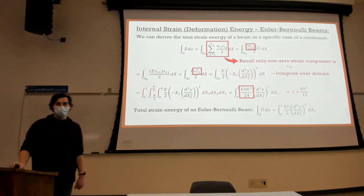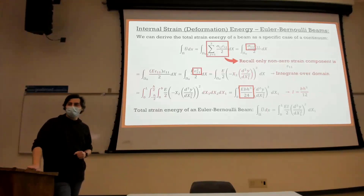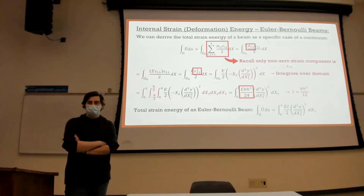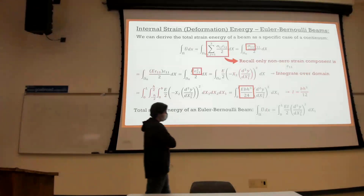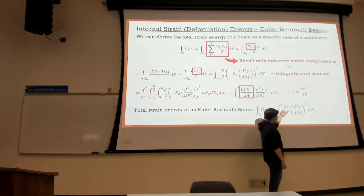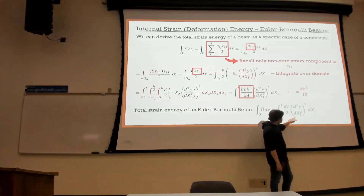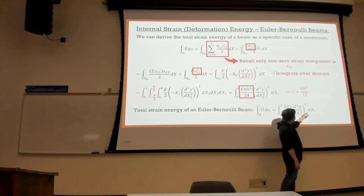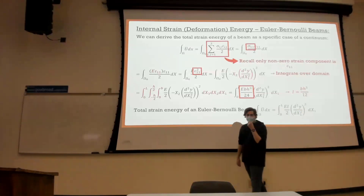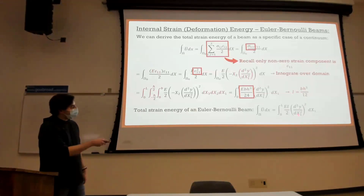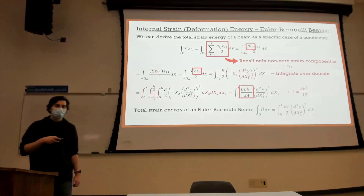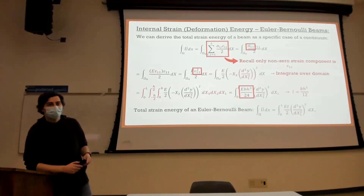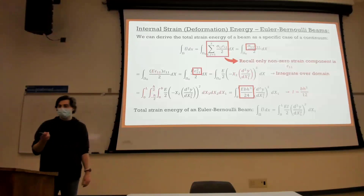Does this look similar to virtual work? Who remembers what the internal virtual work equation was? It was EI times the second derivative of the deflection function times the second derivative of the virtual deflection function. If you take two identical second derivatives and multiply them together you get the square — so the only real difference is this equation has a divide by two. Where did that come from? Linear elastic materials — the area of a triangle is one-half, and that one-half shows up here.